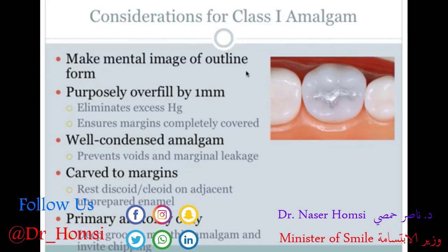For class 1 amalgam, make a mental image of the outline form you prepared first so you know what the filling should look like when done and where the original edges of the tooth structure were. Purposely overfill by about a millimeter or more — this eliminates excess mercury and ensures the margins are completely covered. The last thing you want is a gap or discrepancy between tooth and amalgam when it finally sets, which can be difficult to fix without redoing part of it.